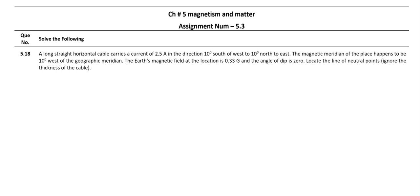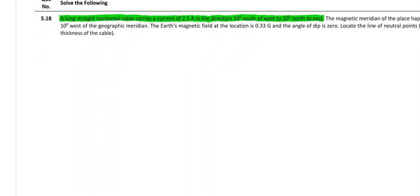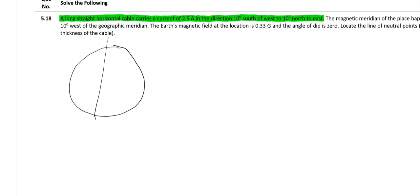Let us deal with the problem in chunks. Let us read the first line and try to understand the situation. A long straight horizontal cable carries a current of 2.5 ampere in the direction 10 degrees south of west to 10 degrees north of east. Consider the geographic north pole and geographic south pole placed like this — this becomes east and here is west.